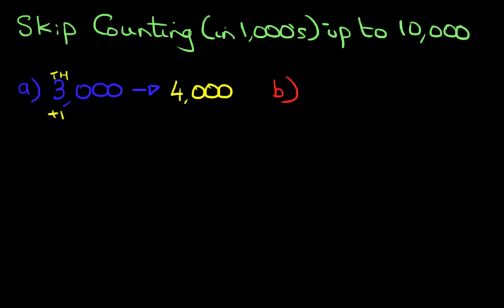Our next example, we've got 7,000. What number comes after 7,000 if we are counting in thousands?